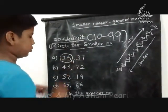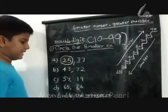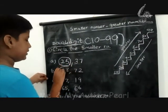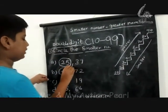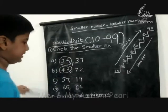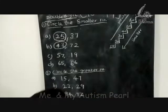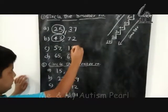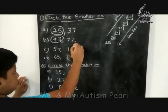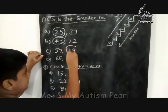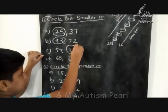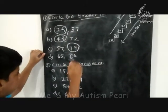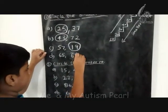43 — because it has only 4 tens. Ok. 90 — because it has 9 tens.